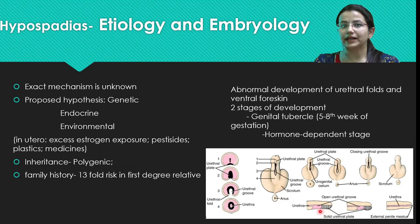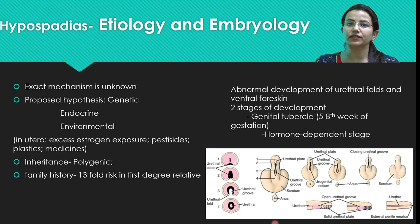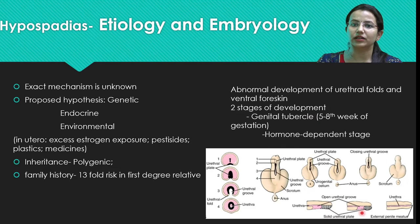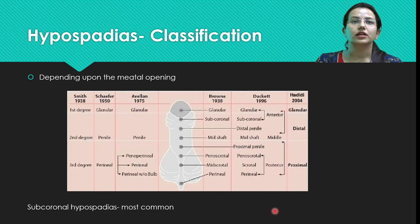Initially the proximal tube is formed. The urethral plate is a solid plate which by the end of gestation also tubularizes to give a complete urethra. However, if there is arrest in this process at any stage, it could lead to incomplete formation of the urethra and thus hypospadias.